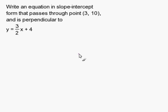Write an equation in slope-intercept form that passes through a point and is perpendicular to y equals 3 over 2x plus 4.